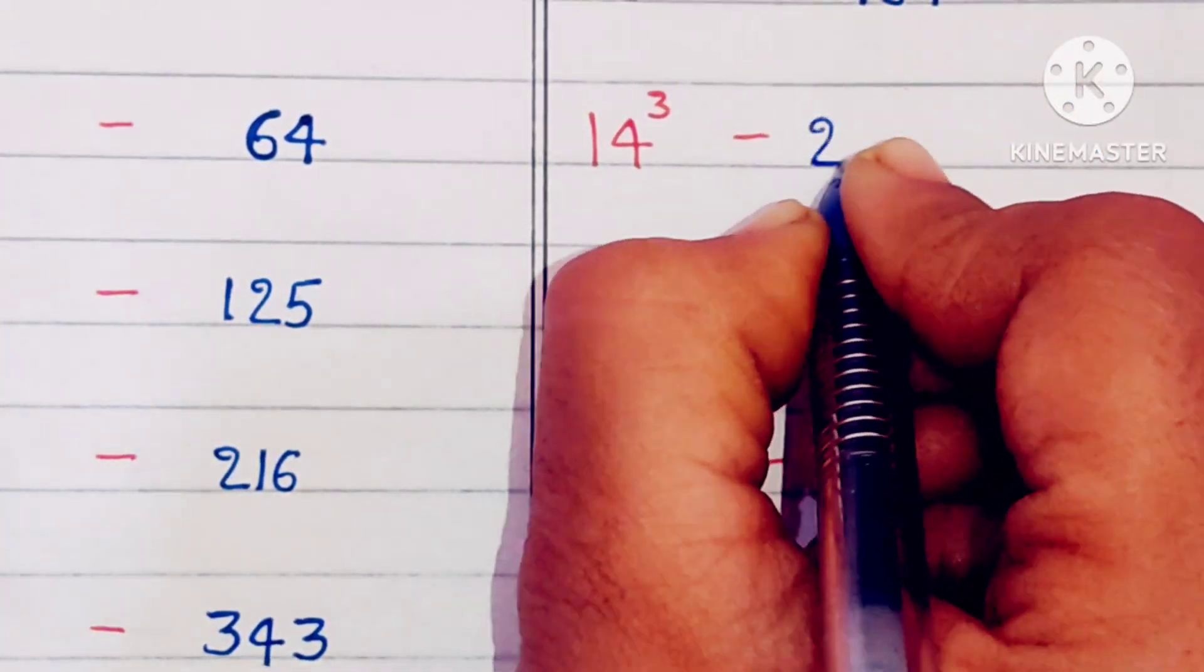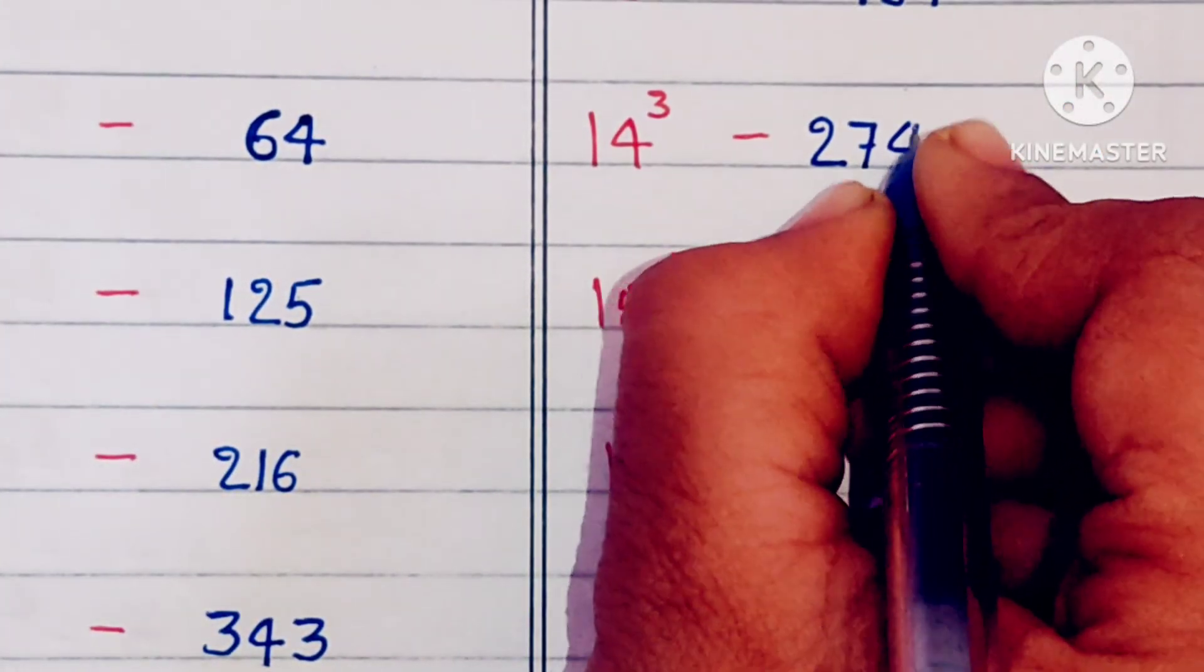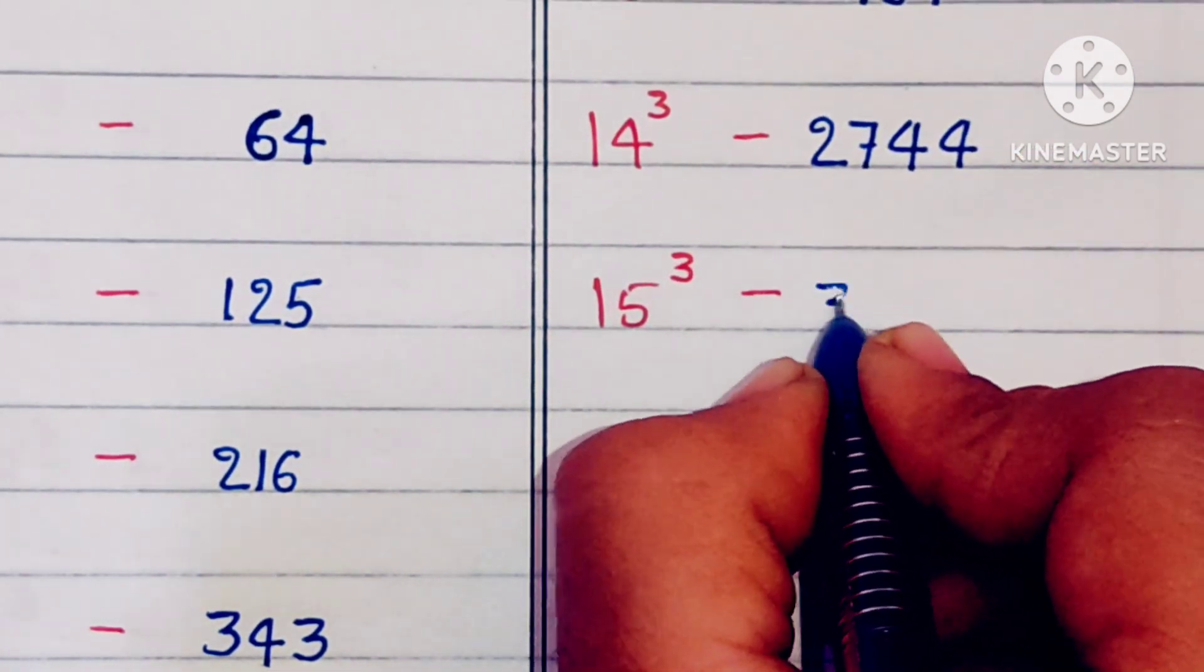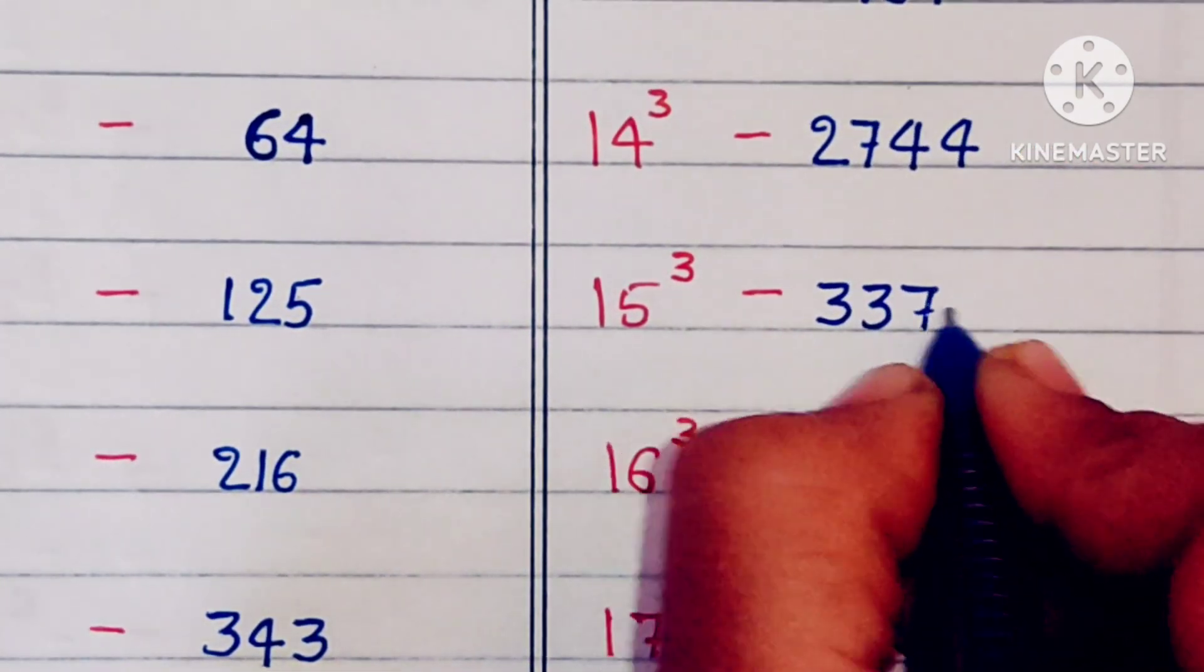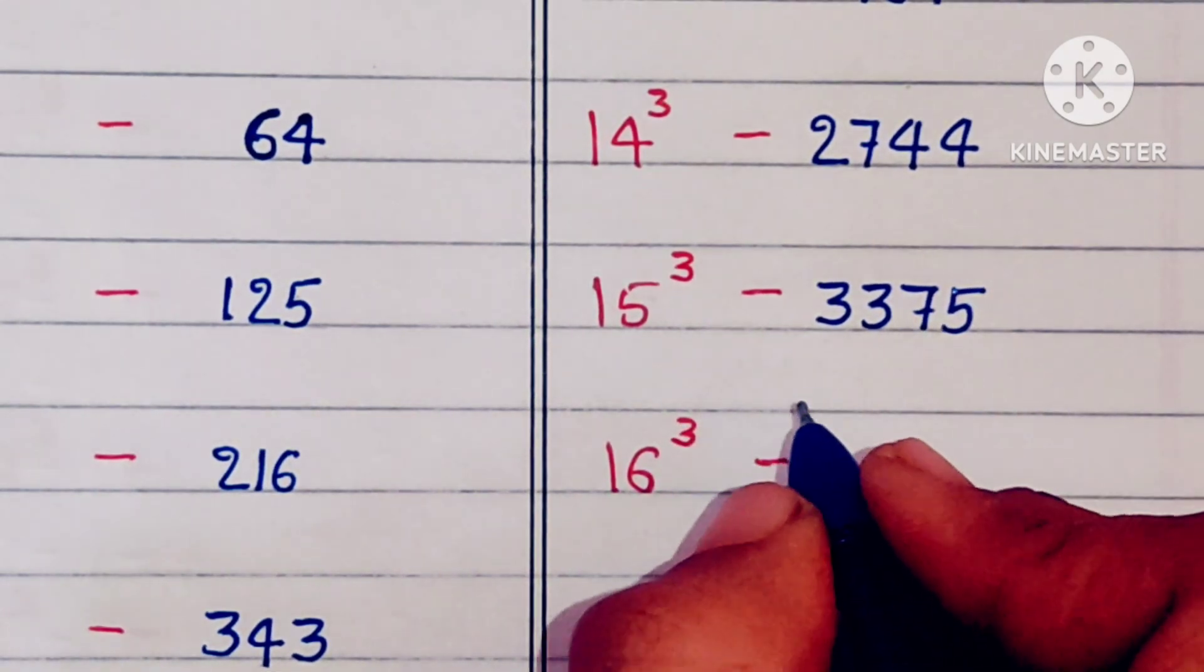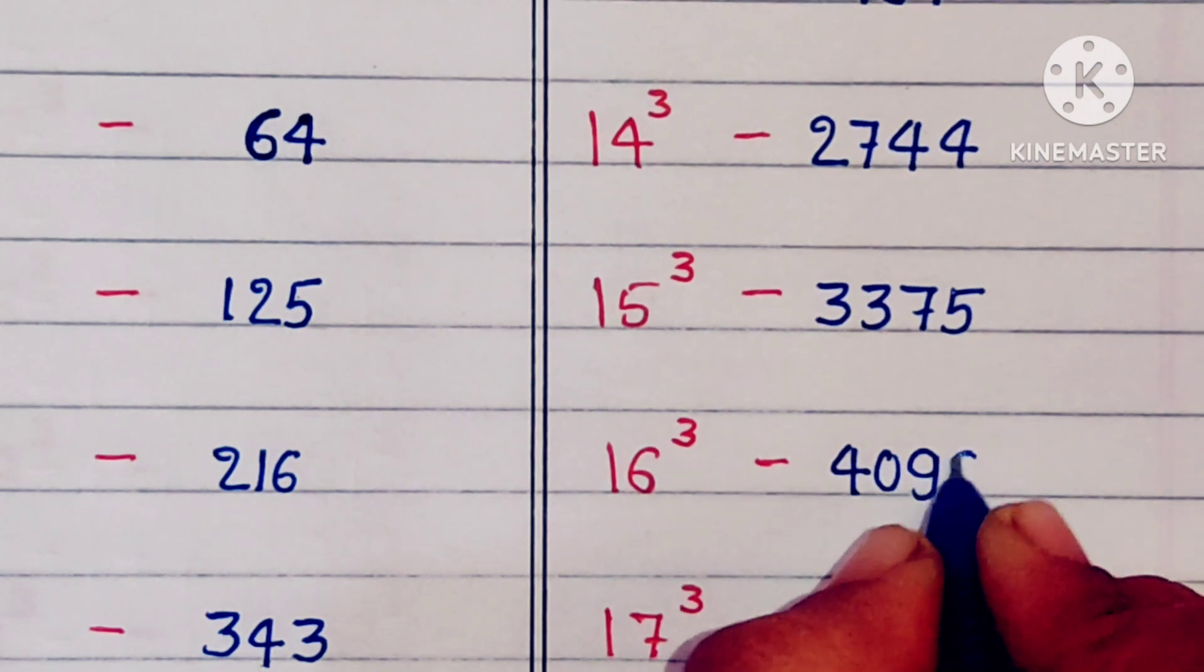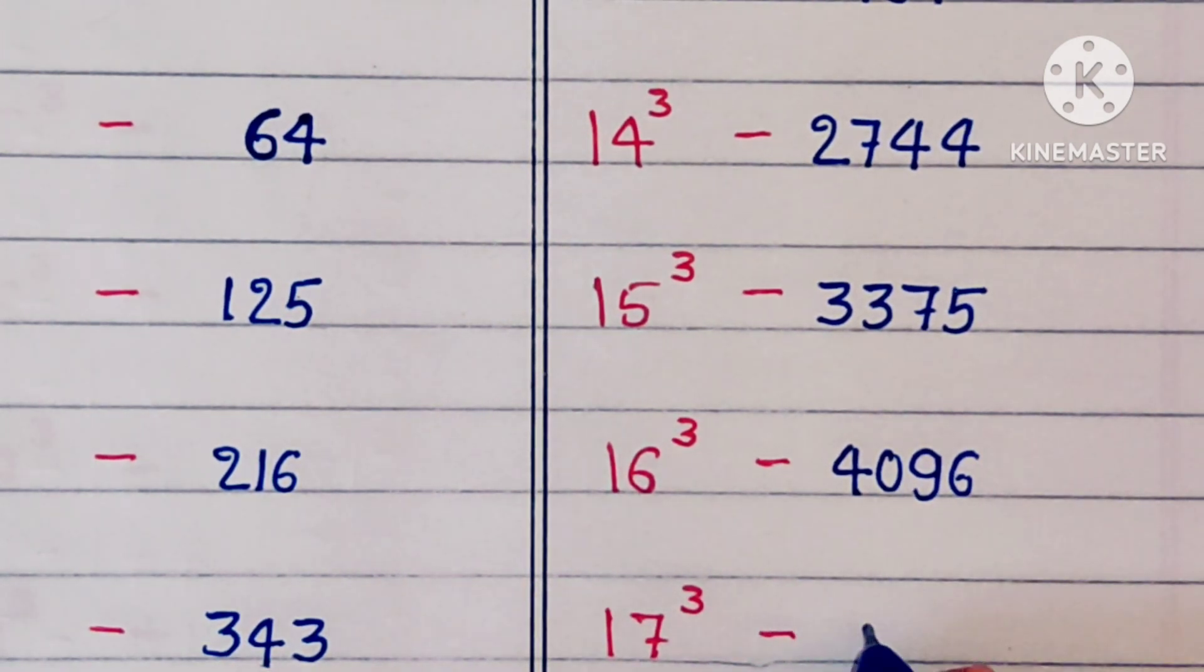14 cube is 2744, 15 cube is 3375, 16 cube is 4096.